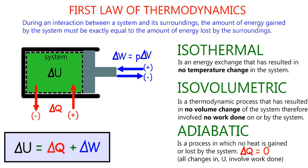And an adiabatic process is a thermodynamic process in which no heat is gained or lost by the system. In other words, there is no delta Q. Delta Q is zero. There is nothing entering the system, and nothing leaving the system. All changes in internal energy are due to work done.